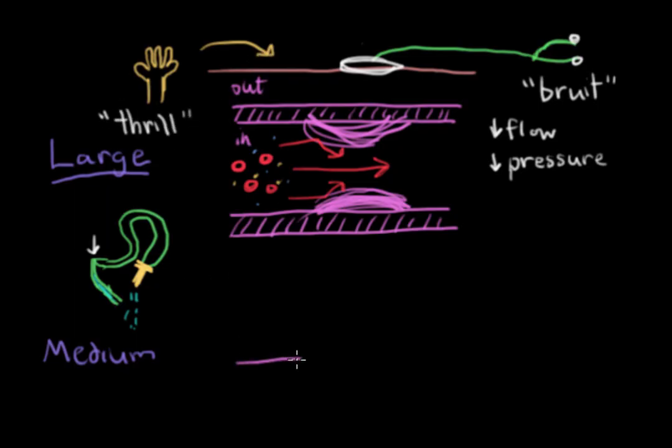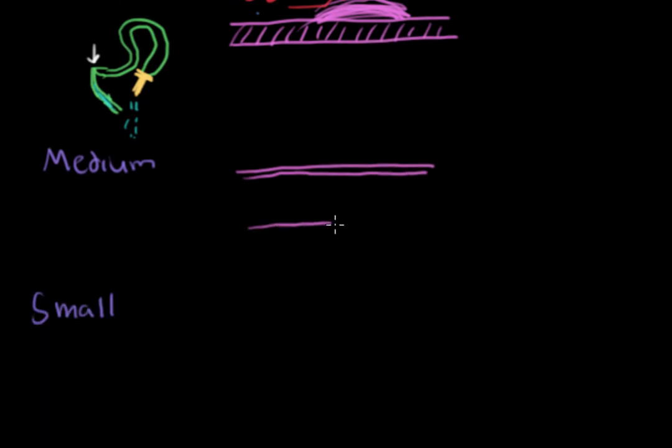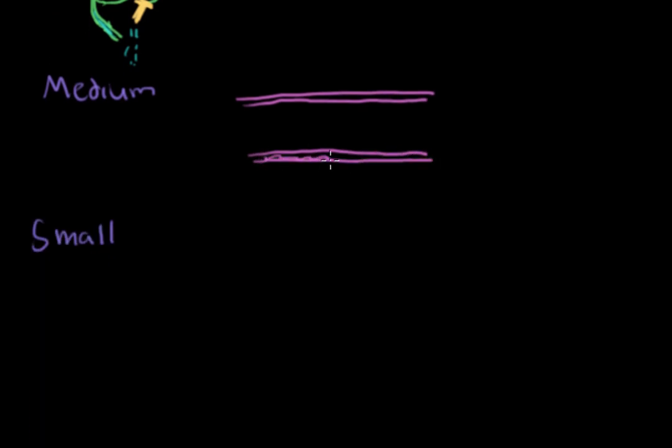Now for medium-sized blood vessels, when scarring occurs for these vessels, it can potentially block flow altogether. This leads to blood cells kind of getting stuck behind the blockage. And little proteins in the blood known as clotting proteins can form a clot and completely stop blood flow.